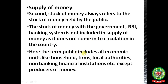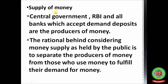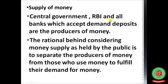The term 'public' includes all economic units like households, firms, local authorities, and non-banking financial institutions, except producers of money. Producers of money means the RBI. The central government, RBI, and all banks that accept demand deposits are producers of money. Demand deposits include savings accounts and current accounts. The rationale is to separate the producers of money from those who use money to fulfill their demand for money.